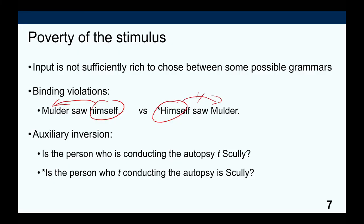Another common example of a poverty of the stimulus situation is auxiliary inversion. If you have a sentence like 'Is the person who is conducting the autopsy Scully?' we must front the auxiliary. However, we have to know which auxiliary to front. If a child just tracked linear order, we might expect it to move the first 'is' and produce 'Is the person who conducting the autopsy is Scully?' — but this is a mistake children never make. They know which auxiliary to move, implying they understand the underlying clausal structure even without explicit evidence.